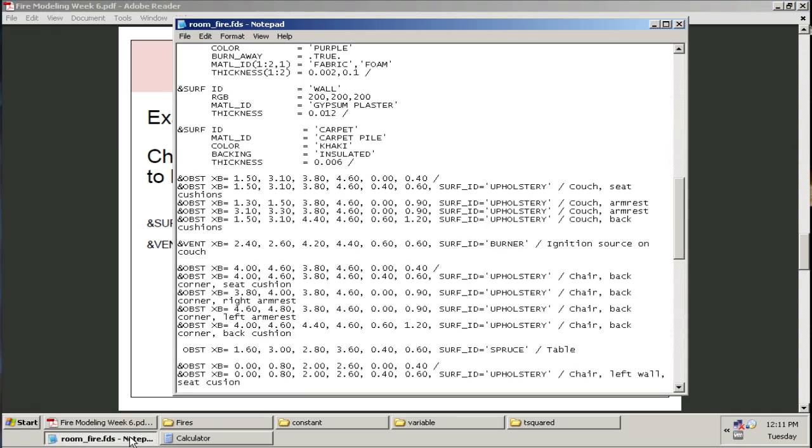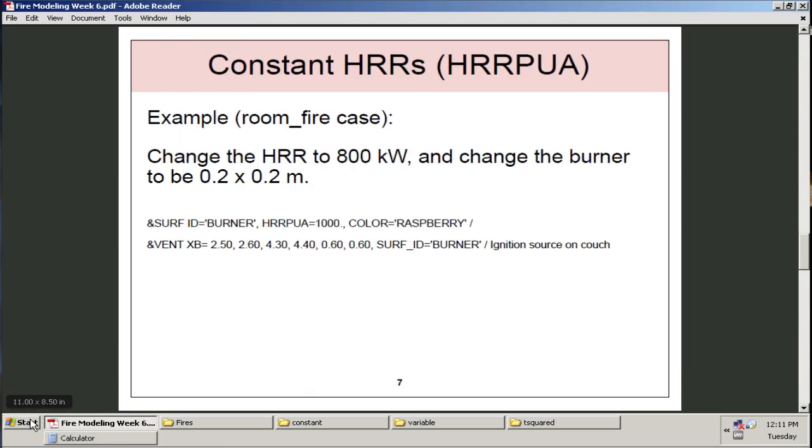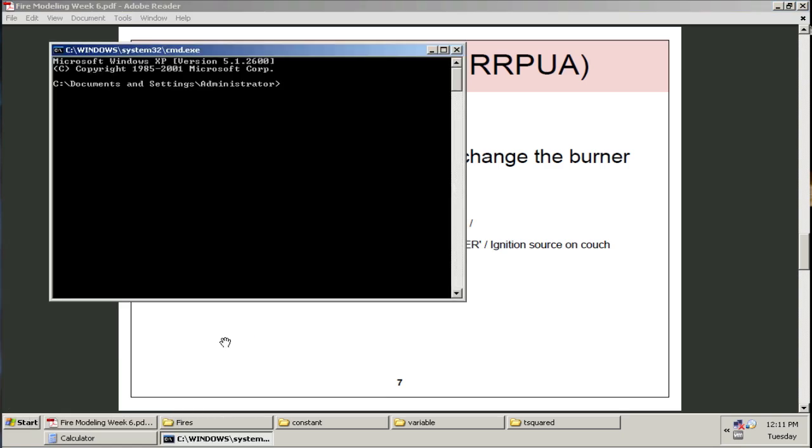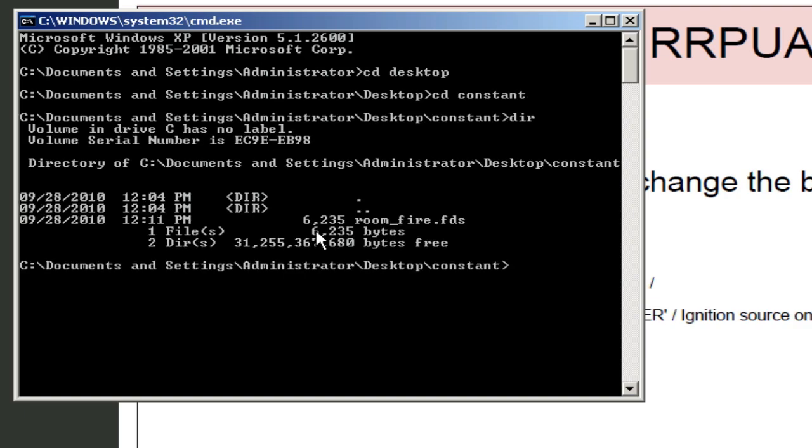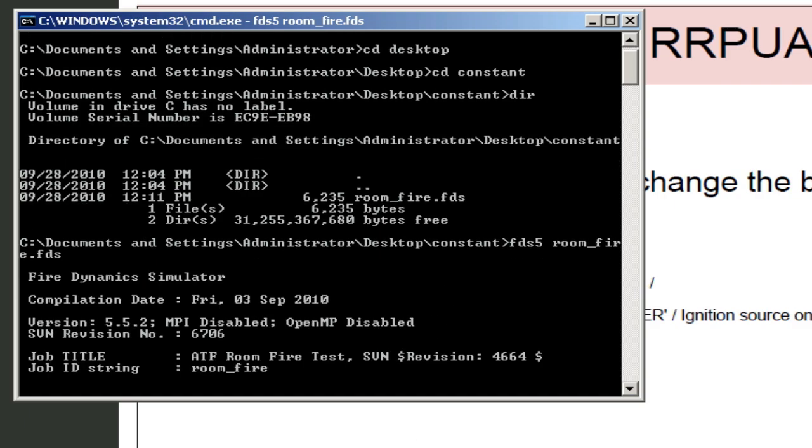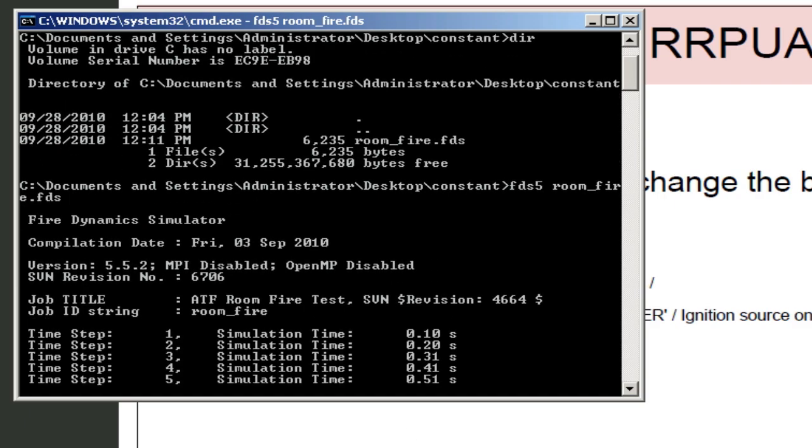What I'm going to do is I'm going to go ahead and run this FDS case. So, I'm going to save my edits and proceed to run. I can go to start menu, run, type cmd to get to the command prompt. And I can type cd desktop, and I can type cd constant to get into that directory. If I type dir, there's roomfire.fds. So, at this point, I can type fds5, roomfire.fds. And hit enter, and that case will run. I'll go ahead and let that case run because we'll use it at the end to verify that we have the correct heat release rate in FDS. So, that case is running.